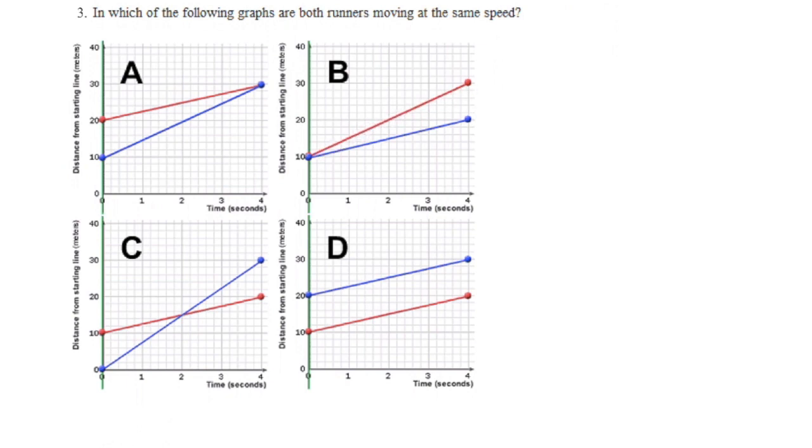In this graph, blue is steeper, blue is running faster. This person has covered 30 meters compared to this person covering only 10 meters from where they began.